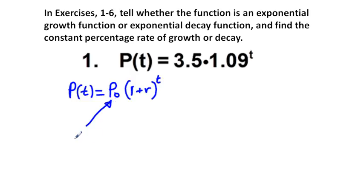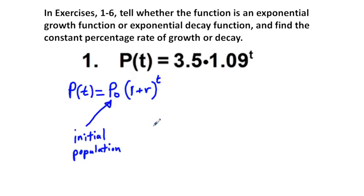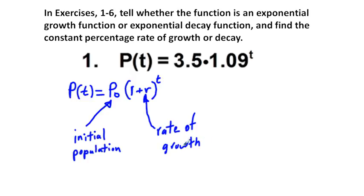First of all, this P sub 0 is called the initial population — but it could be amount, right? It doesn't have to be population. It could be amount of cells, or it could be amount of money. And this R inside here is the rate of growth. And this T right here is the time.